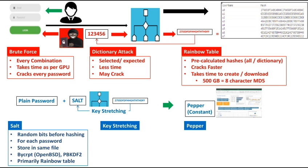Salt is a random value applied to the plaintext password before hashing. The combined values are hashed, and a unique salt is created for each password. It is stored in the same database file as the hashes. Tools like bcrypt for OpenBSD and PBKDF2 use salt, and it primarily protects against rainbow table attacks, as well as brute force and dictionary attacks.